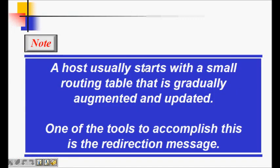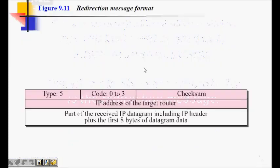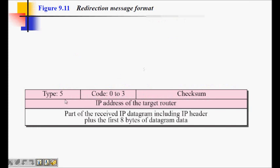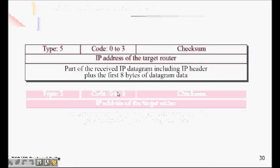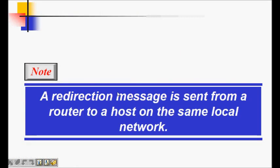So this is good for filling out the routing table. A host usually starts with a small routing table and gradually it is augmented and updated by these redirection messages. Its type is 5 and code can be zero to three. It means a redirection message can be generated in many different ways. A redirection message is sent from a router to a host on the same network.